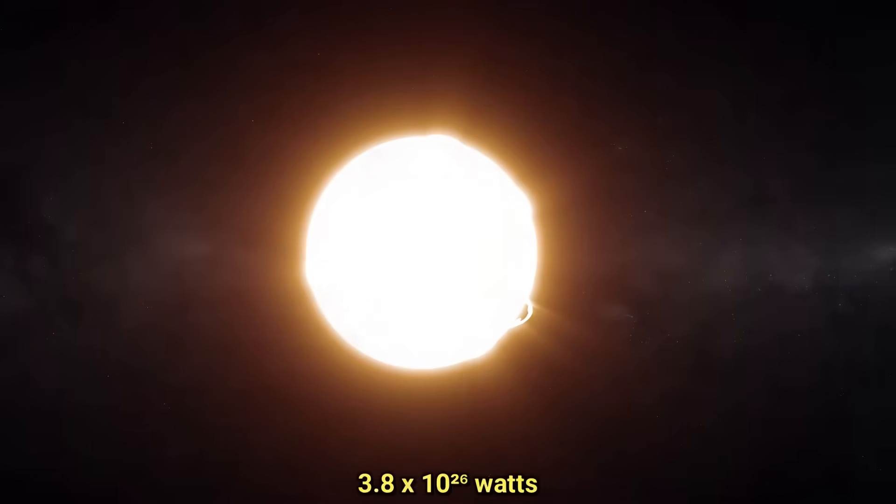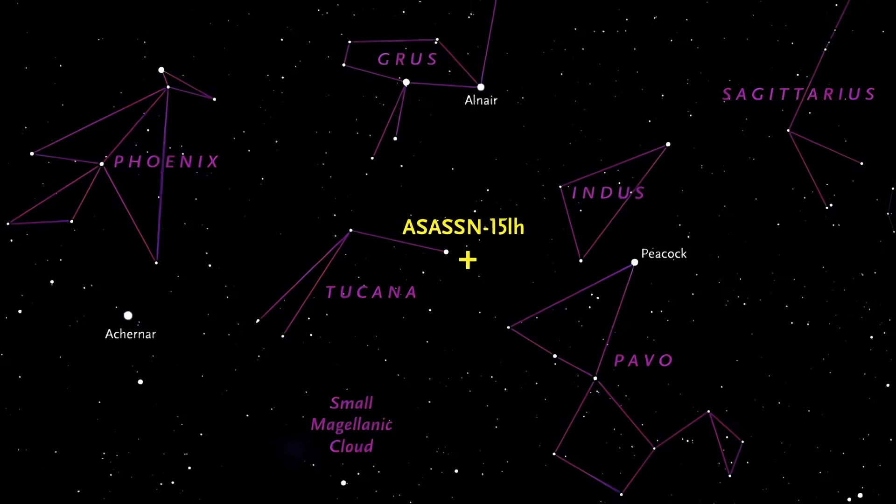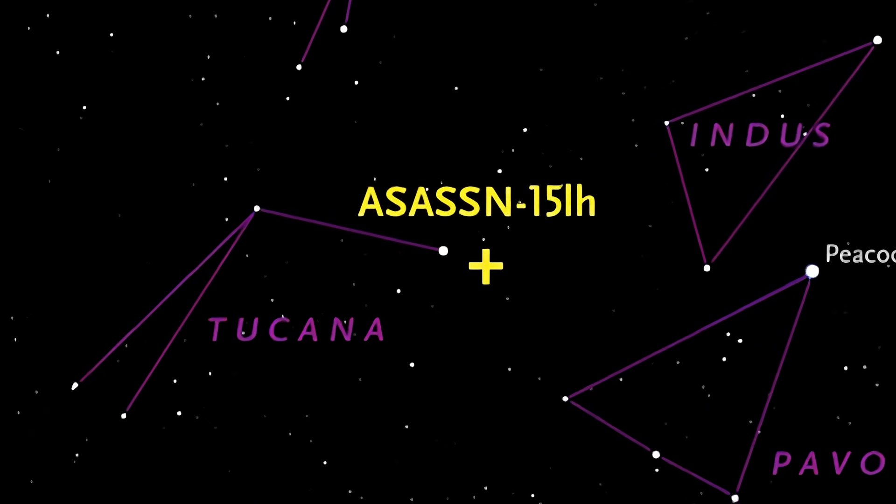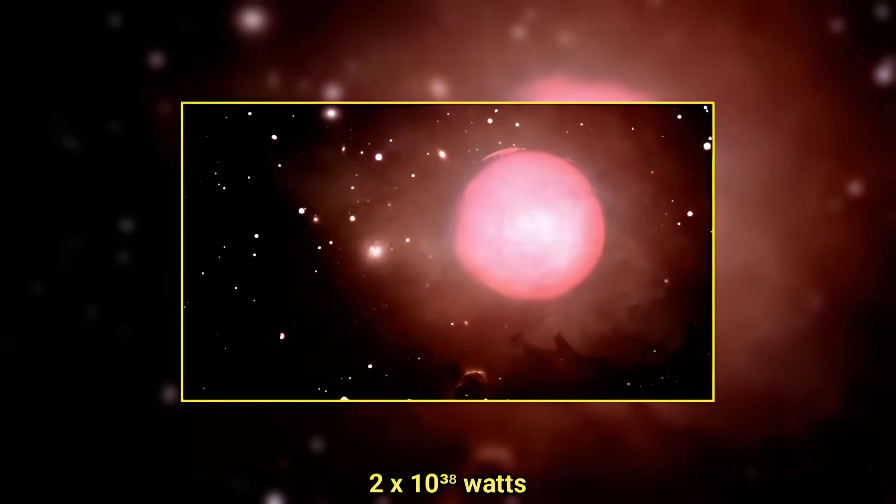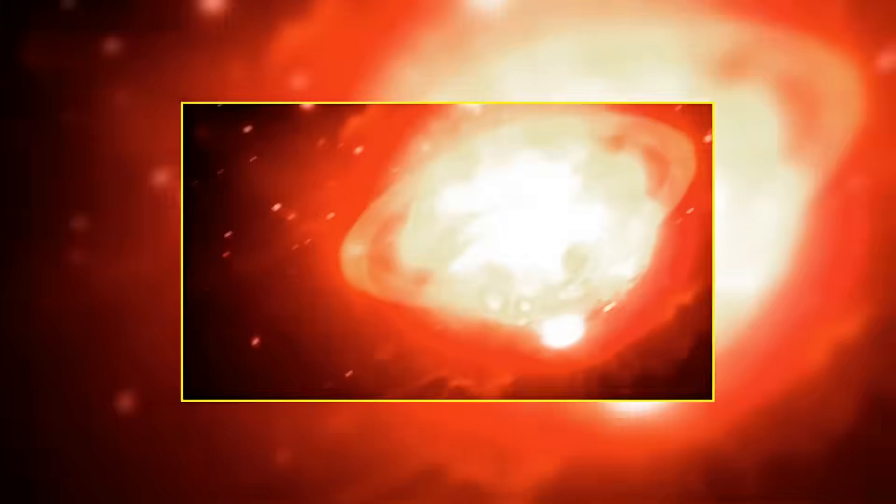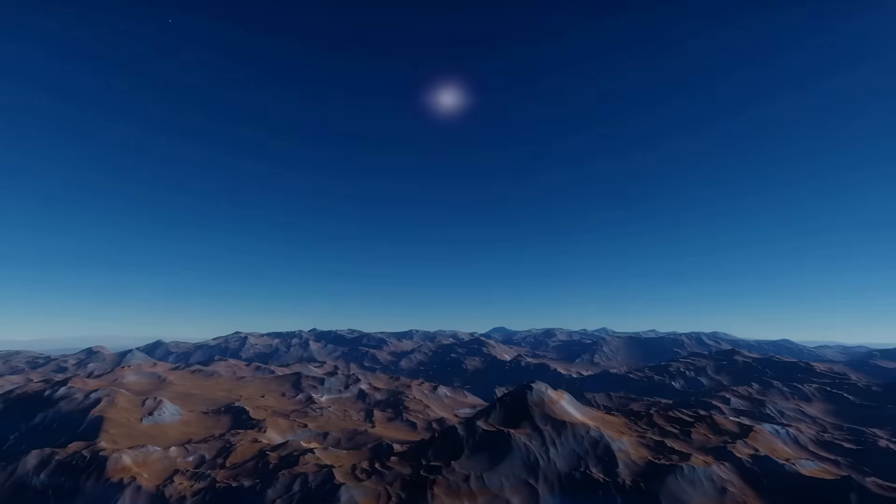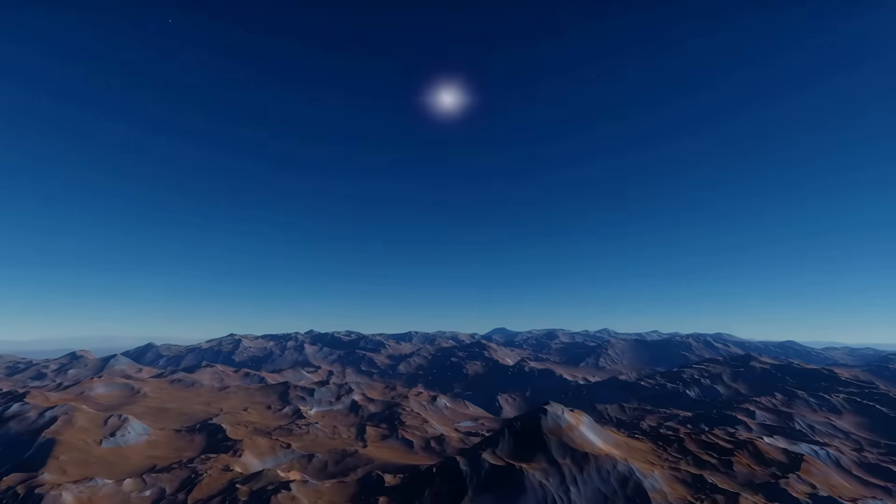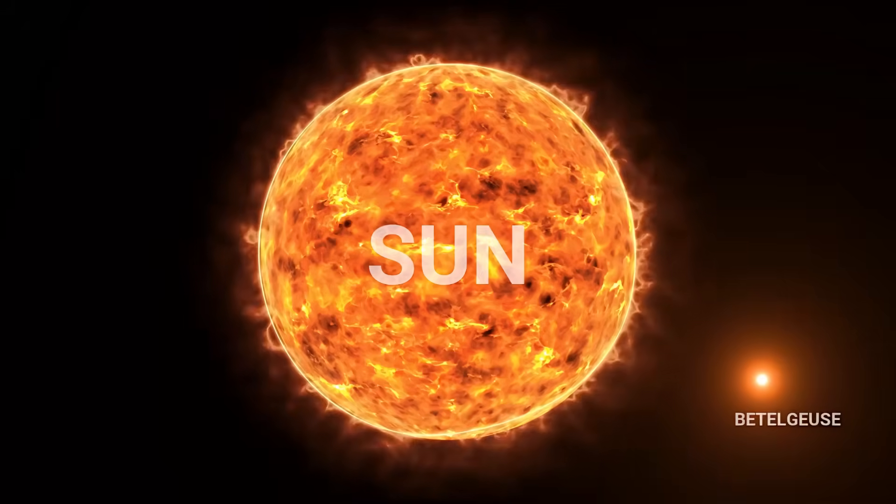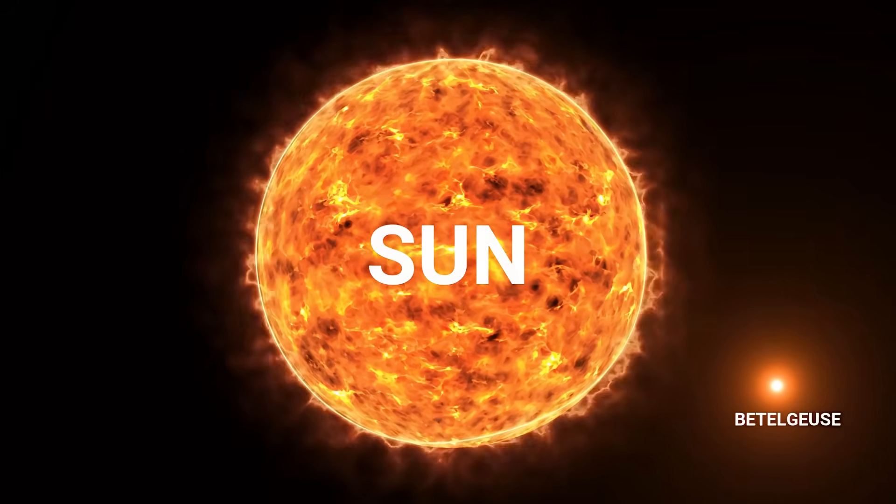To put this in perspective, our sun has a luminosity or power output of 3.8 times 10 to the power 26 watts. However, a supernova observed in 2015, called ASASSN-15LH, reached a peak luminosity of around 2 times 10 to the power 38 watts. The brightness would be the combined output of over 500 billion suns. But why didn't we see it from Earth, you ask? Well, ASASSN-15LH was located in another galaxy. Betelgeuse, however, is in our cosmic backyard.